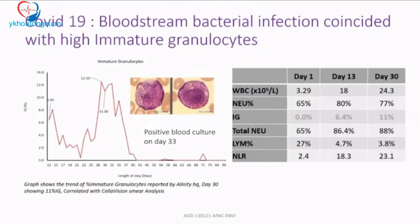The two peaks in the IG data indicated a secondary infection. The neutrophils climbed while lymphocytes dropped from 27% to 3.8% by day 30. The neutrophil-to-lymphocyte ratio (NLR) — critical in COVID-19 — increased from 2.4 on day one to 23.1 on day 30. With a high NLR, rising WBC, and elevated IG, the patient was clearly deteriorating, prompting an urgent blood culture.